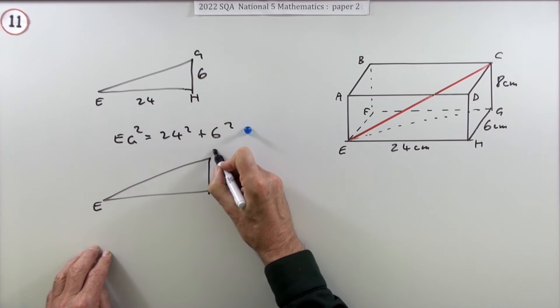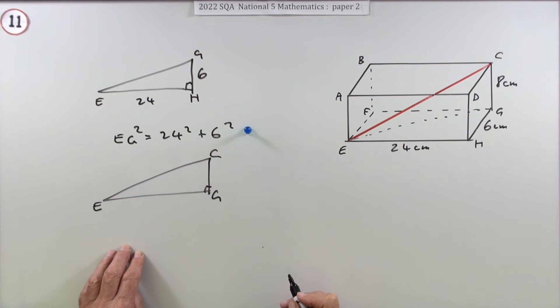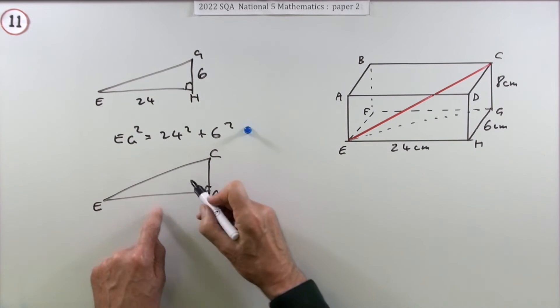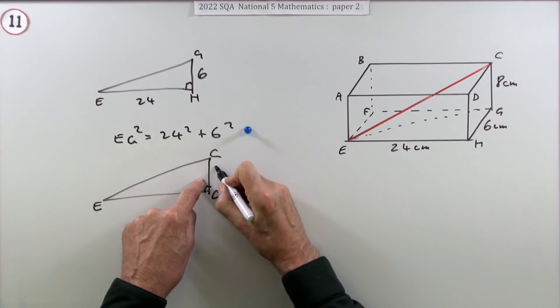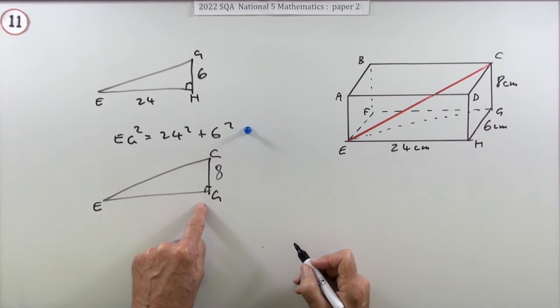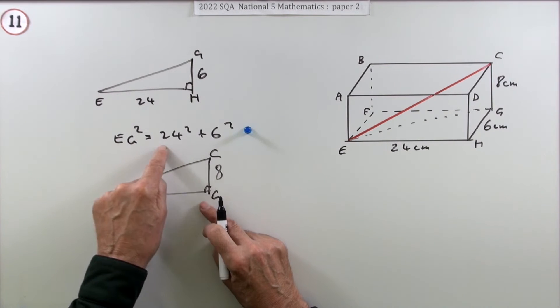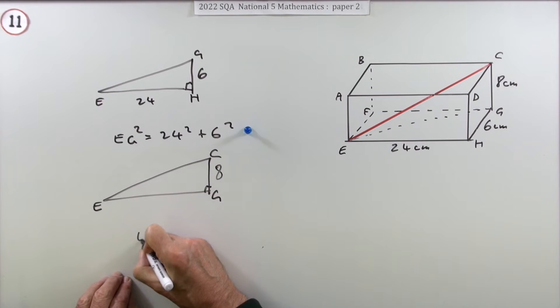Now transfer that into the triangle you actually want, which is this triangle—the one that goes from E to C via G. In this triangle, you know that height is 8, and you know EG. Well, you don't know EG specifically, though I did work it out, but you don't want EG anyway. You want the square of it, and you know the square of it.